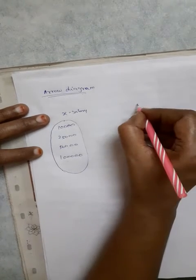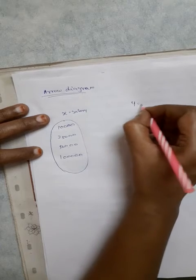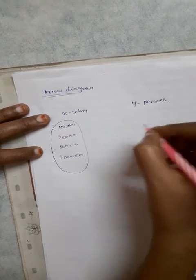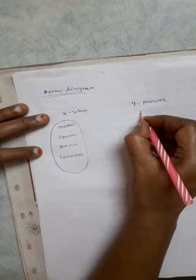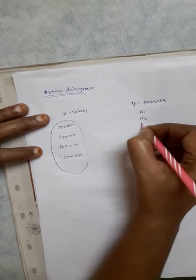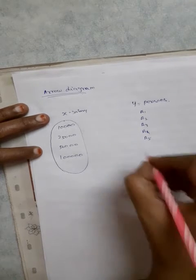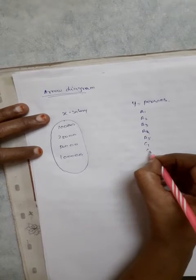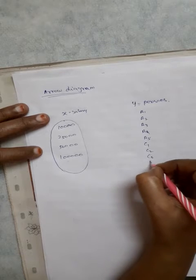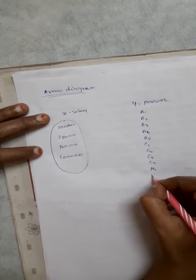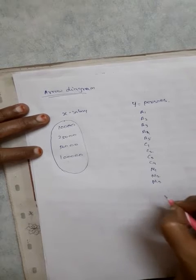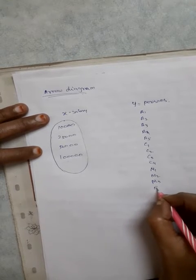Now Y is the person. A1, A2, A3, A4, A5, five assistants. Clerk is C1, C2, C3, C4. Managers: M1, M2, M3. Executive officers: E1, E2.